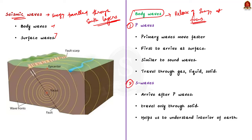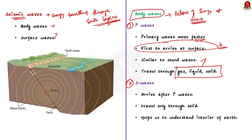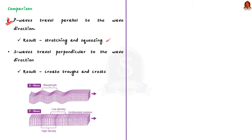P waves (primary waves) move faster and are the first to arrive at the Earth's surface — they are similar to sound waves and can travel through solid, liquid and gaseous materials. S waves (secondary waves) arrive after P waves and can travel only through solid materials — this characteristic helps us understand the interior of the Earth. P waves vibrate parallel to the wave direction, causing stretching and squeezing of material (longitudinal), whereas S waves vibrate perpendicular to the wave direction, creating troughs and crests (transverse).